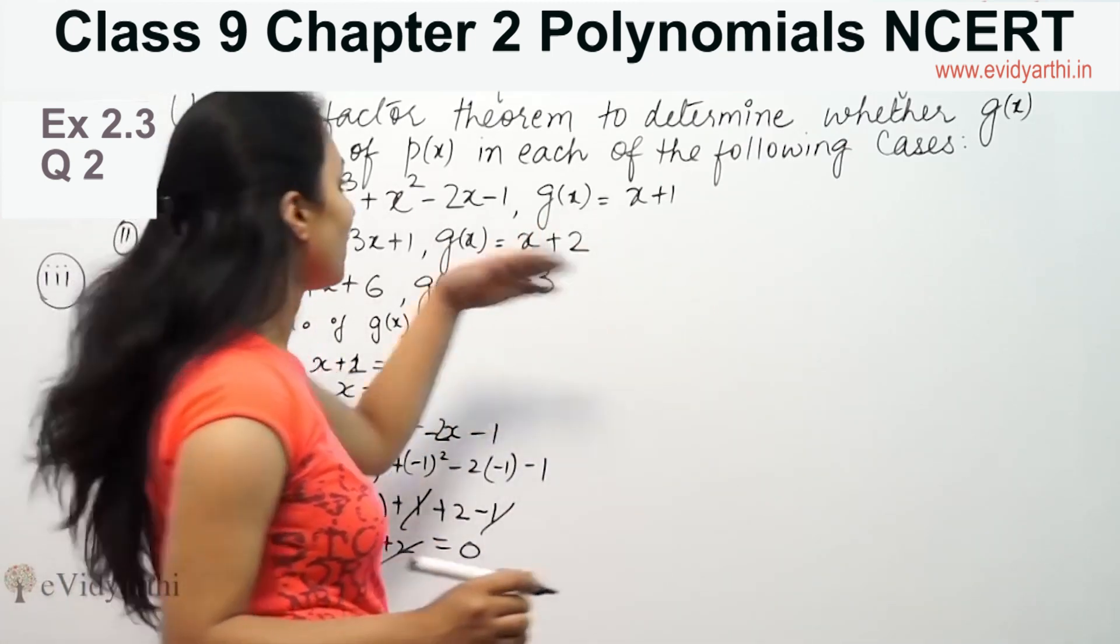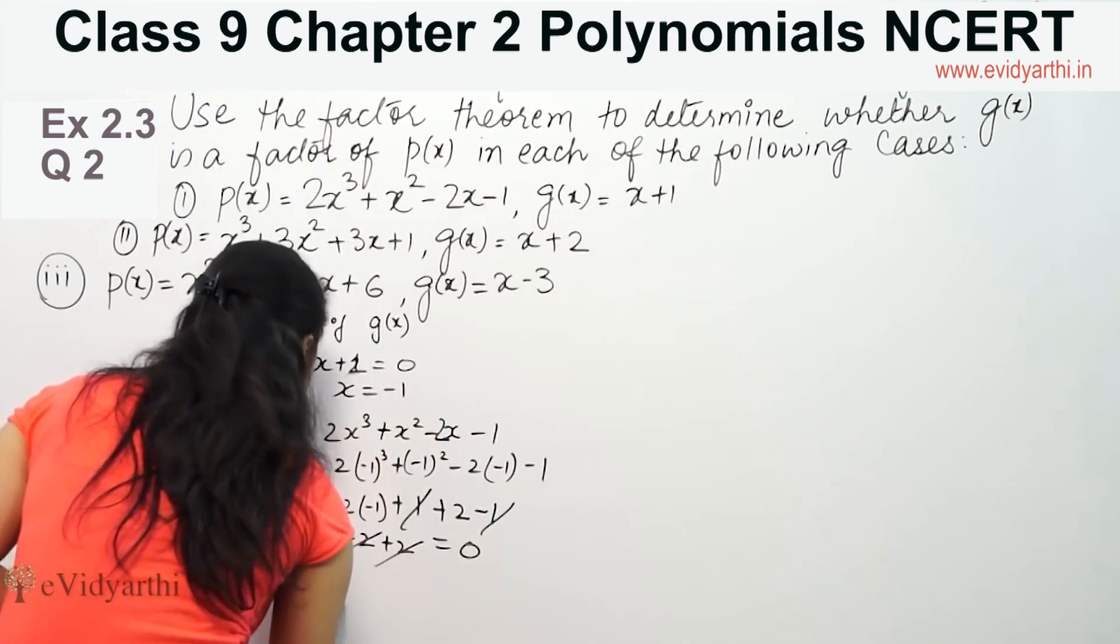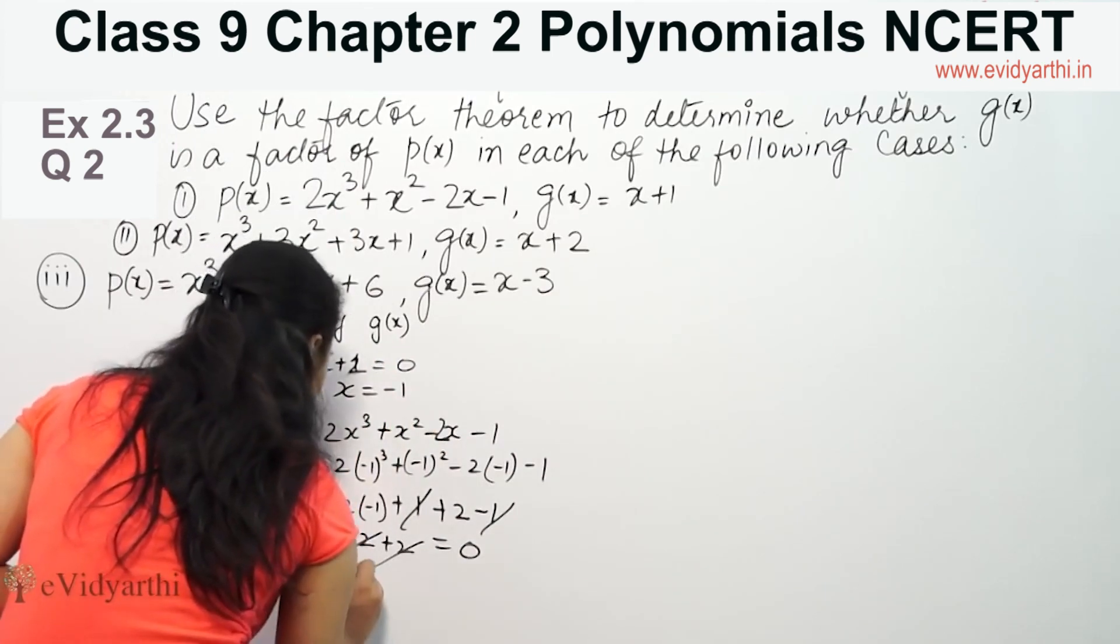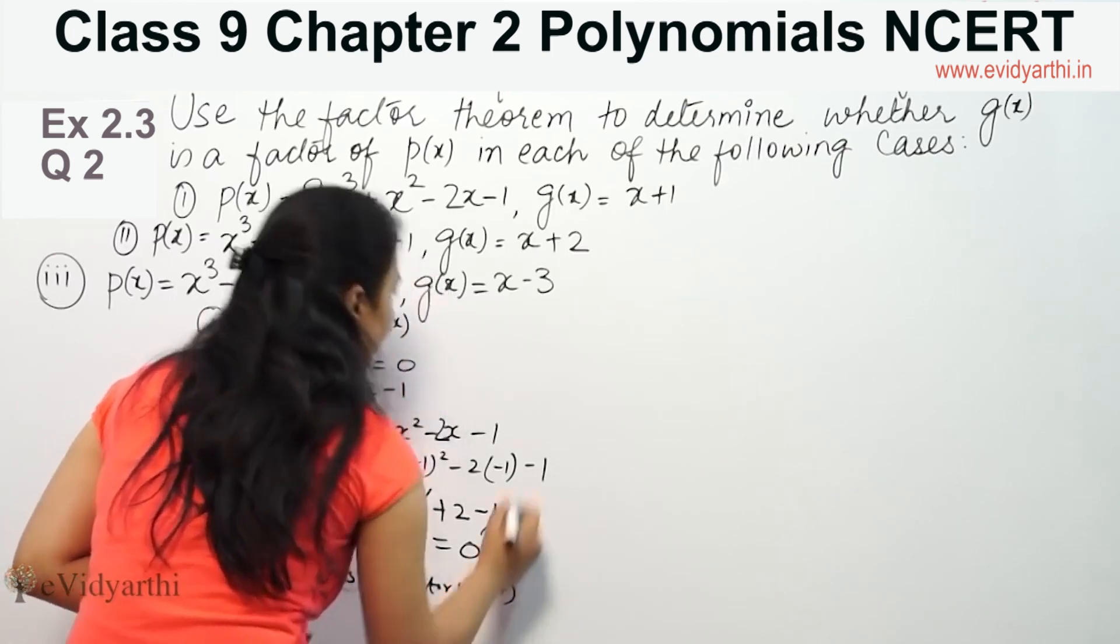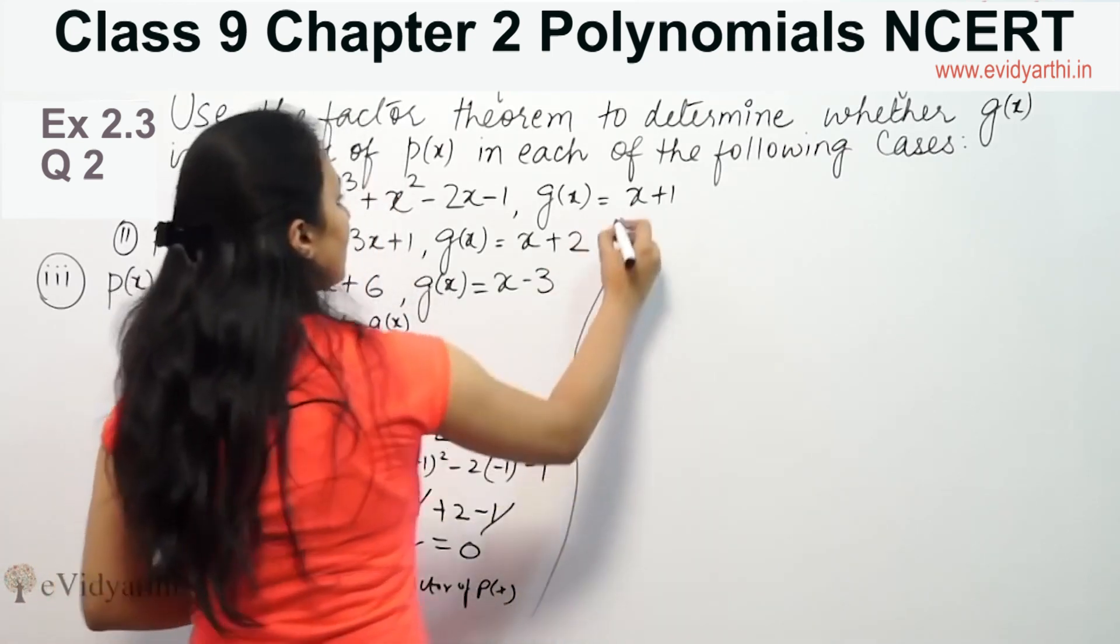So g(x) is a factor of p(x) because the answer is zero. Therefore, g(x) is a factor of p(x).